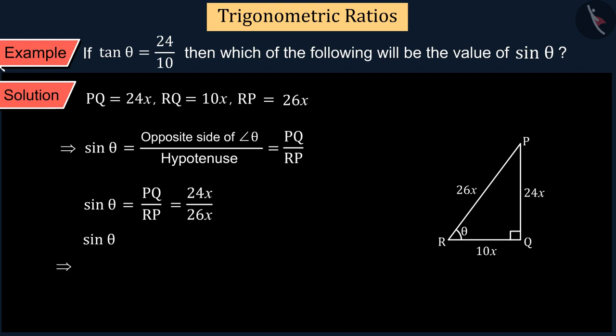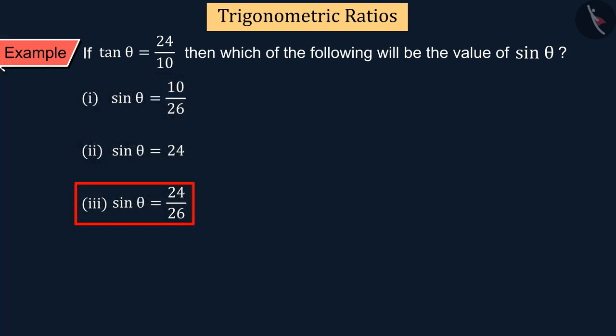Putting the value of PQ and RP we get sin θ equals 24 upon 26, so we can say that option 3 is the correct answer.